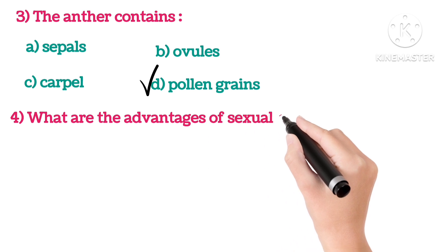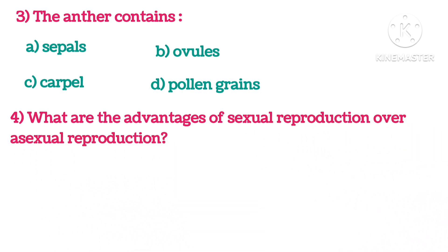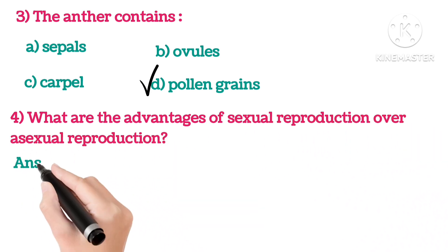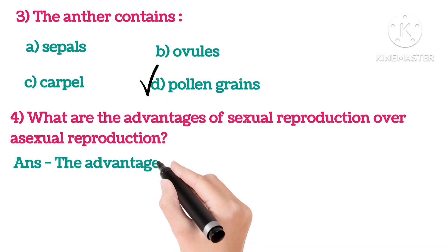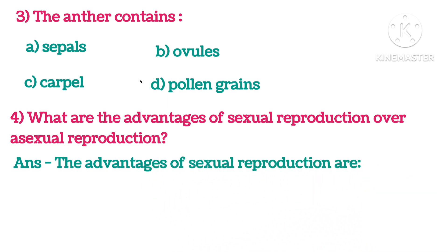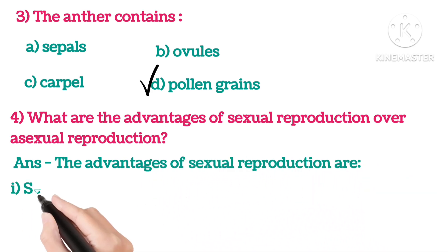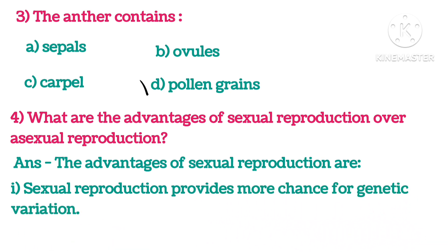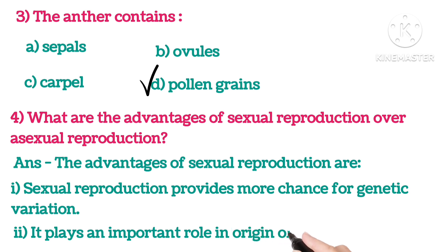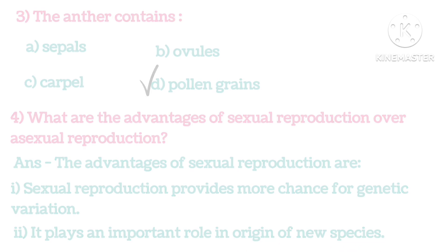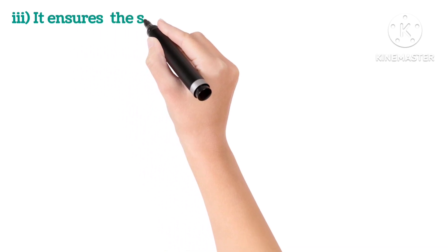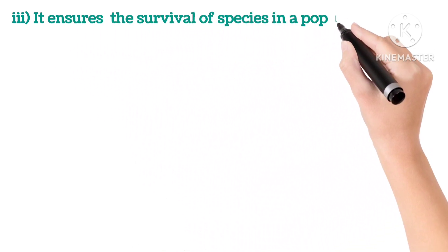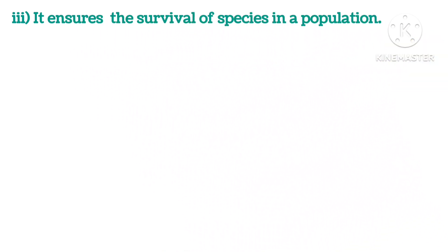Fourth: What are the advantages of sexual reproduction over asexual reproduction? The advantages of sexual reproduction are: First, it provides more chances for genetic variation. It plays an important role in the origin of new species. It ensures the survival of species in the population.